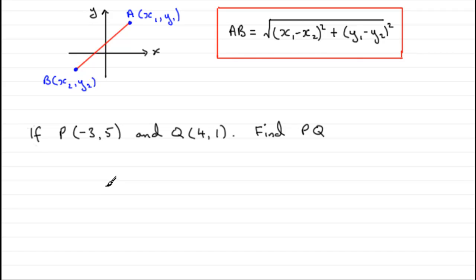So we know that to find PQ, all we need to do is the square root of the difference between the x-coordinate squared plus the difference between the y-coordinate squared. So I'm going to take minus 3, put it in brackets, minus 3, and then subtract the 4. And then we square that, plus the difference in the y-coordinates. So we're going to do 5 minus that 1. And then we square that.